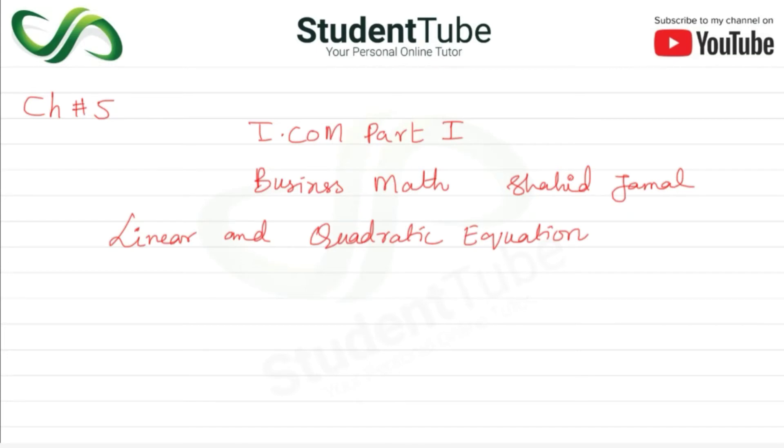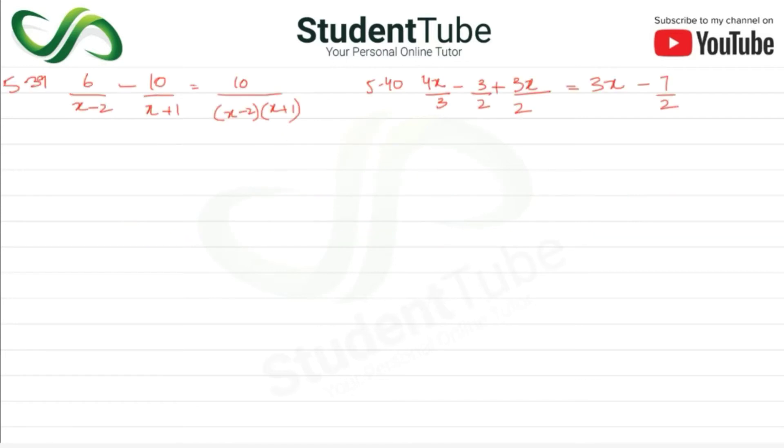Assalamualaikum, welcome to StudentTube. In today's lecture, Chapter 5, Part 1, Business Math book by Shahid Jamal. The chapter is linear and quadratic equations. Question 5.39: 6 upon x minus 2, minus 10 upon x plus 1, is equal to 10 upon x minus 2, x plus 1.